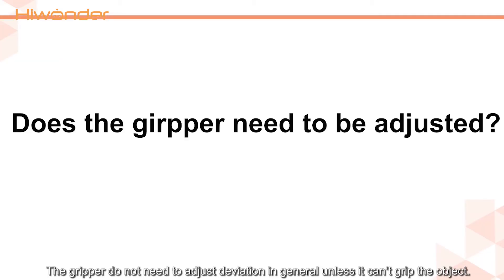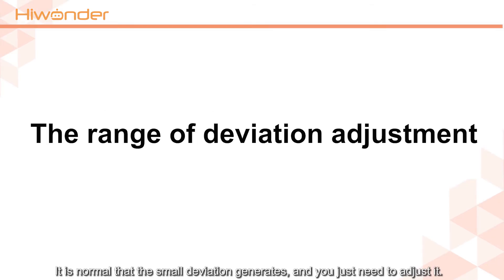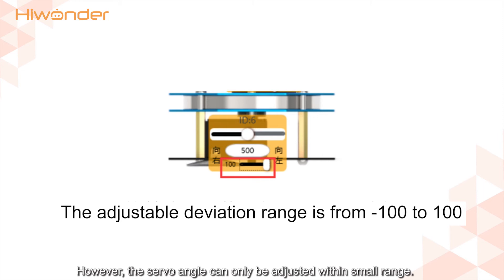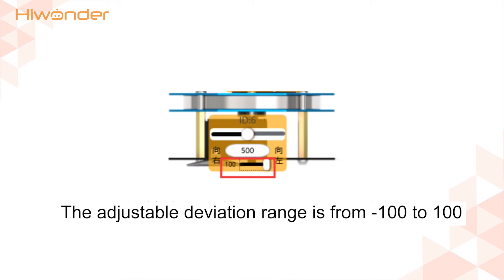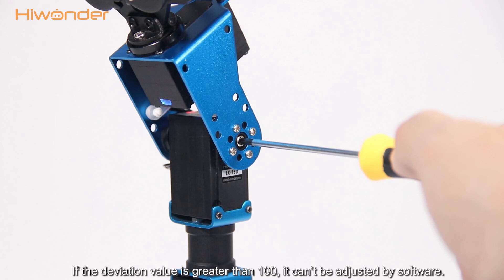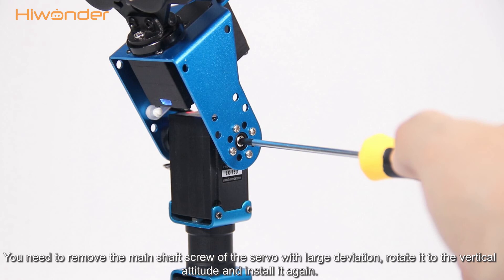The gripper generally does not need deviation adjustment unless it can't grip an object. Small deviation is normal and just needs to be adjusted by software. However, the servo angle can only be adjusted within a small range. If the deviation value is greater than 100, it cannot be adjusted by software — you need to remove the main shaft screw of the servo with large deviation, rotate it to the vertical position, and install it again.